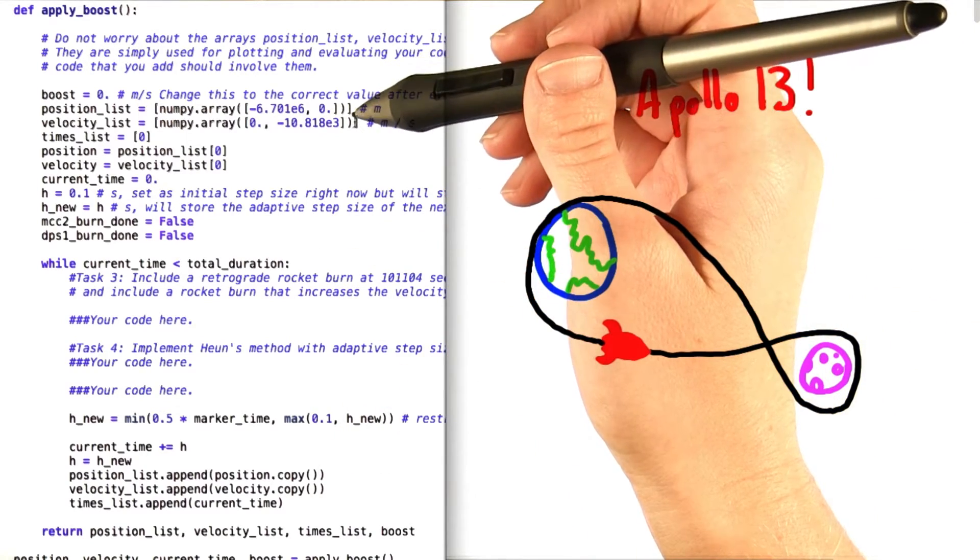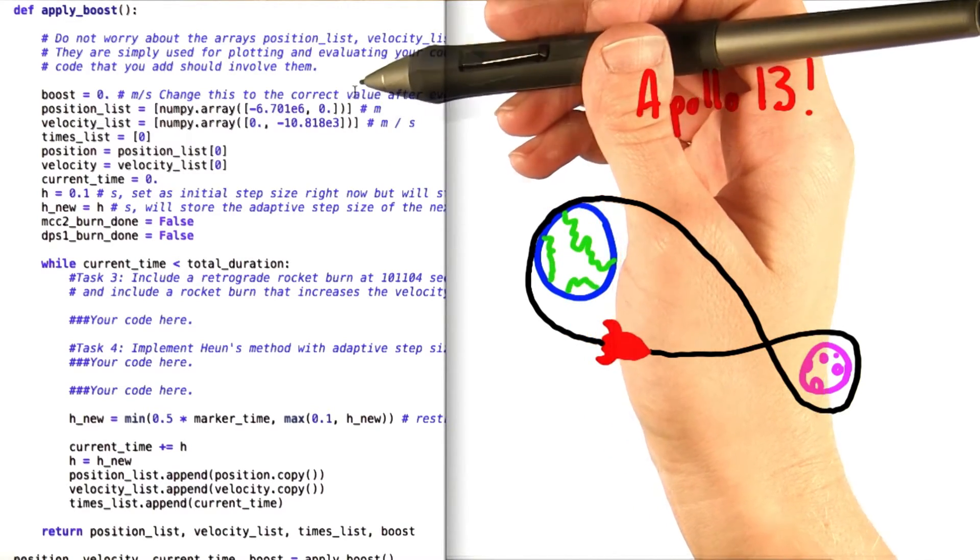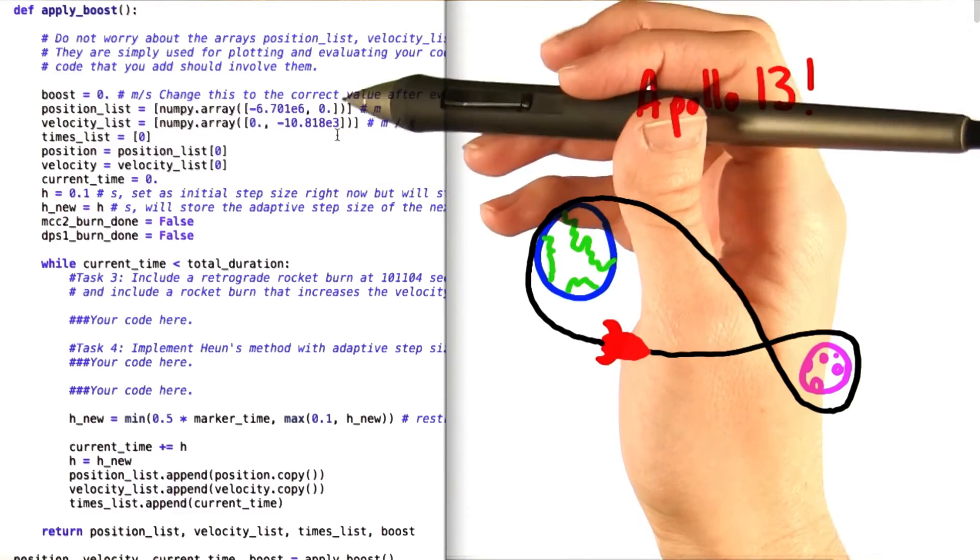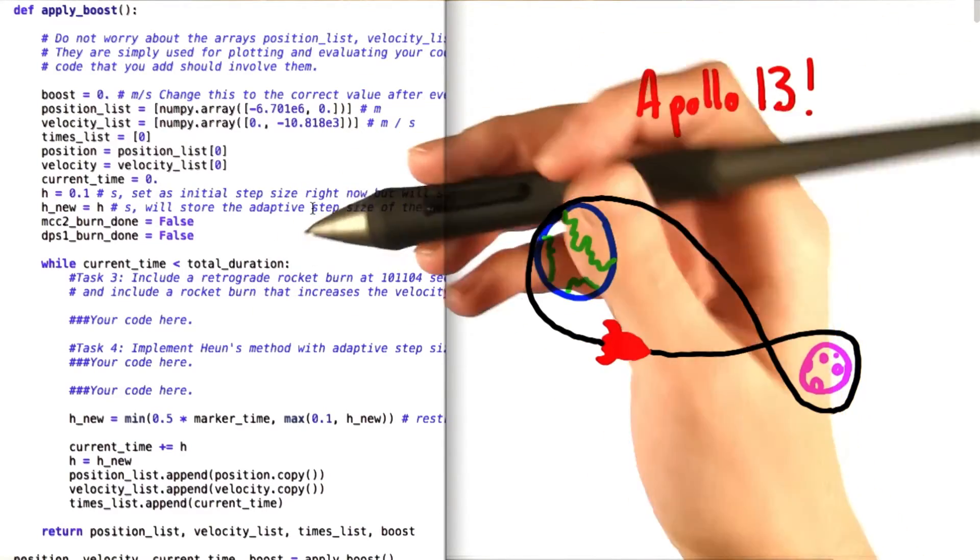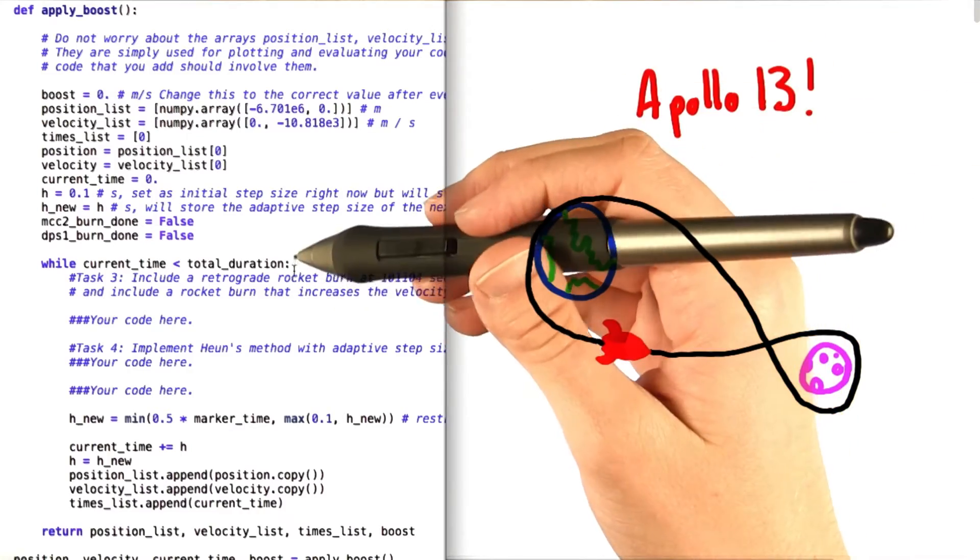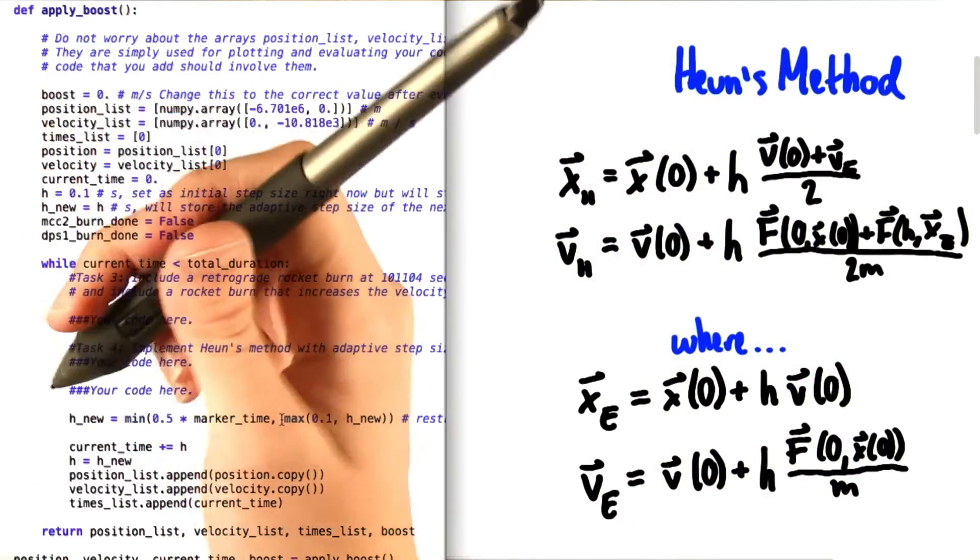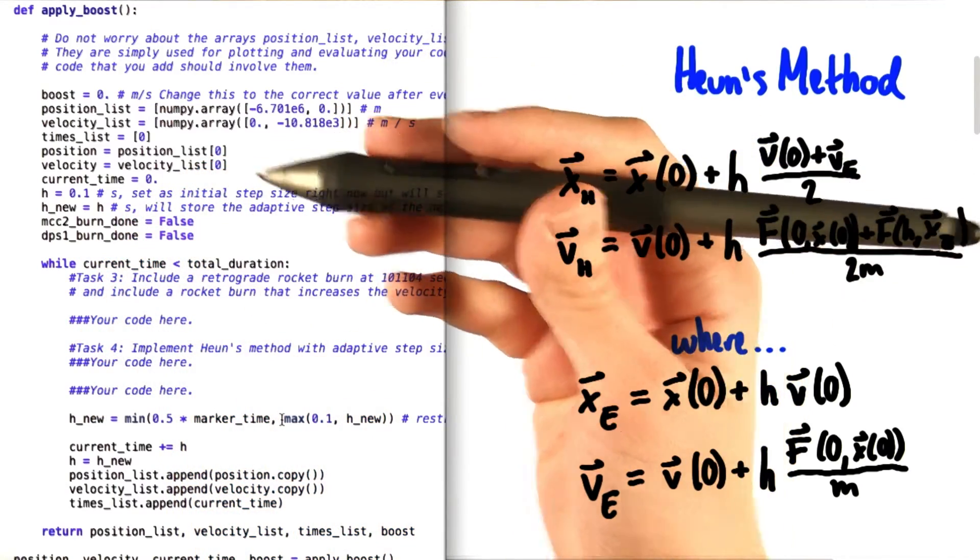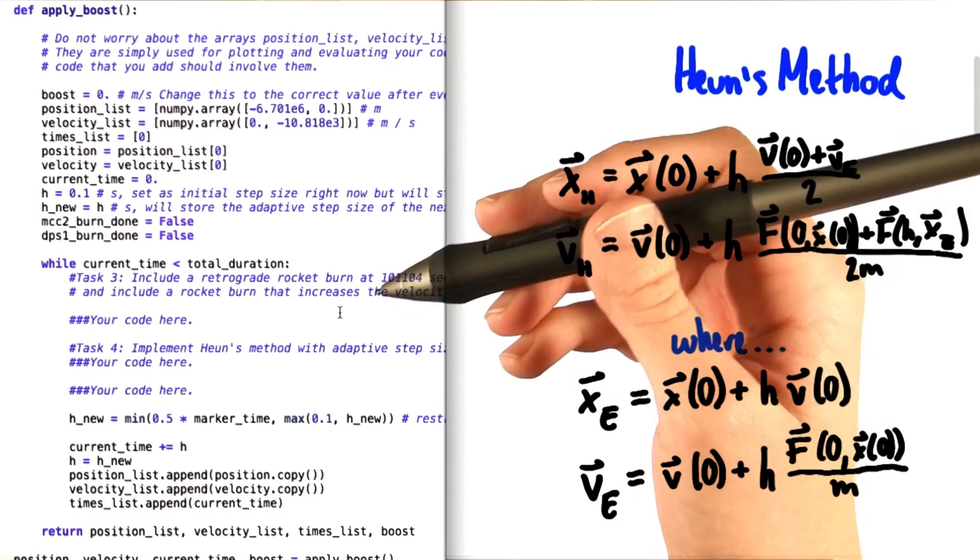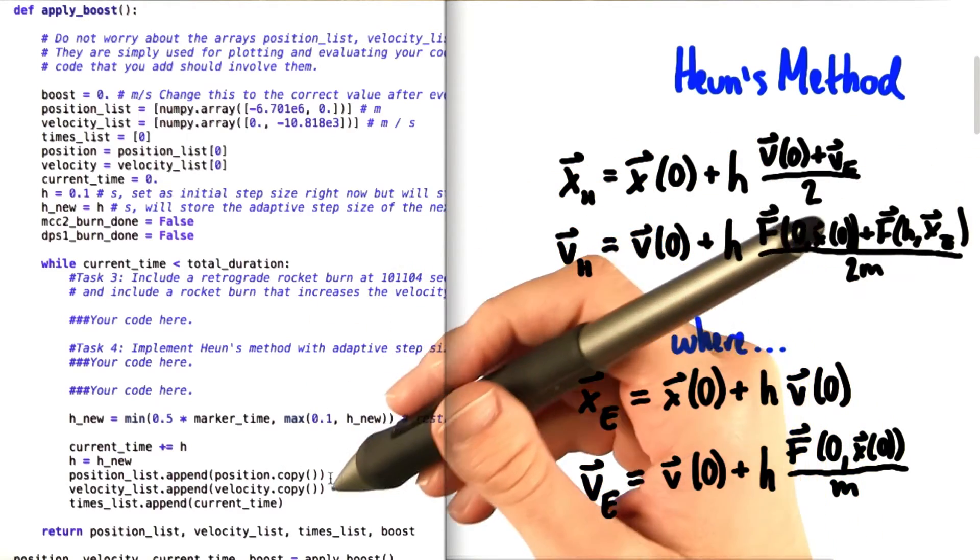You can notice that we've set up position and velocity vectors for you right here, and plugged in initial values as well. However, it's up to you to figure out how to adjust their values with each step using Heun's method, and adaptive step size. You're going to do that down here in this while loop. Now, here's Heun's method written out for you, just to help you out a little bit. Once you've calculated position and velocity using Heun's method, you'll also need to adjust the step size at the end of the while loop to reset it with a new value for the next time that we go through the loop.